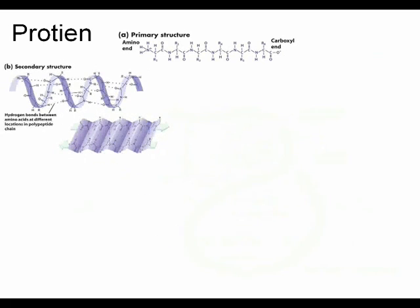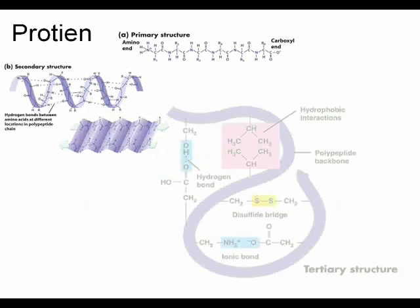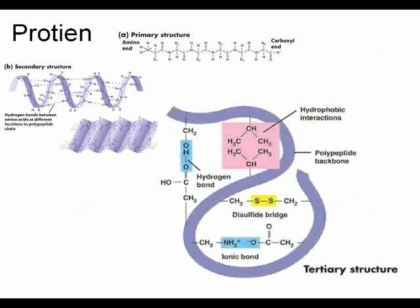Next, a tertiary structure is formed by further folding the primary structure. Hydrogen bonds, disulfide bridges, which are covalent bonds, and ionic bonds stabilize the structure.